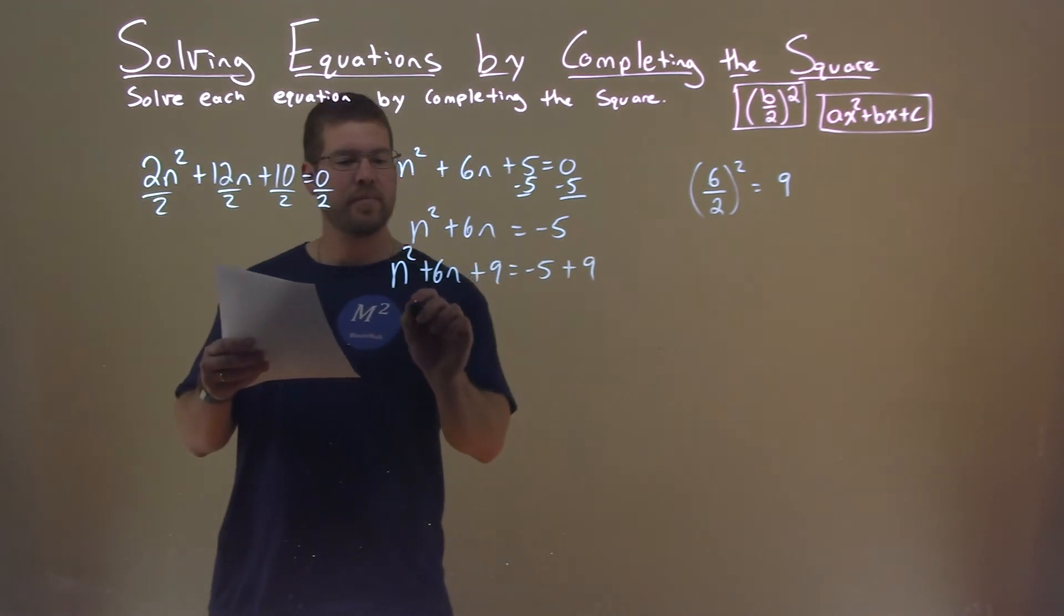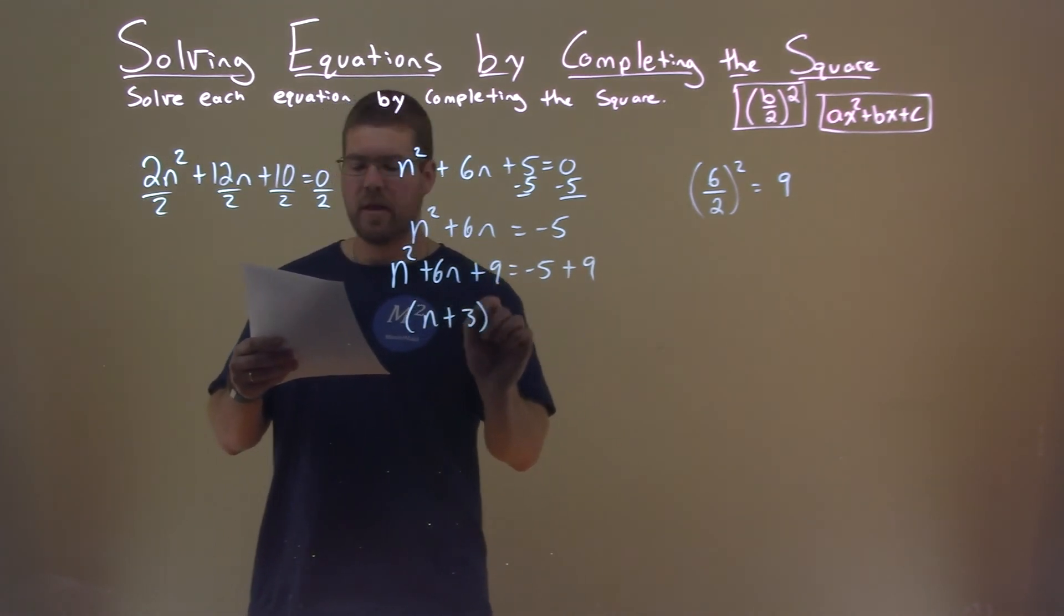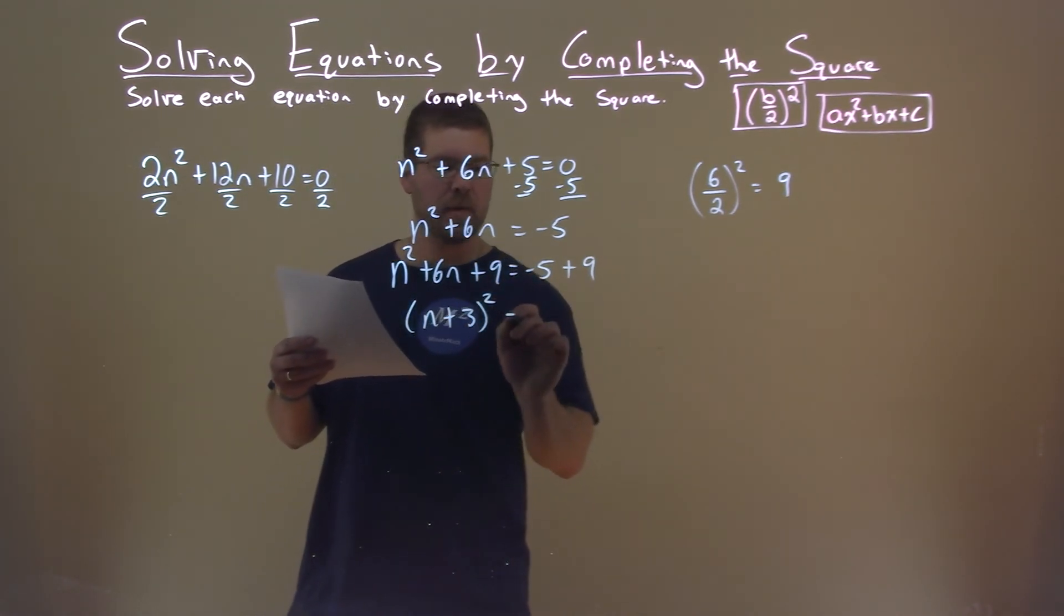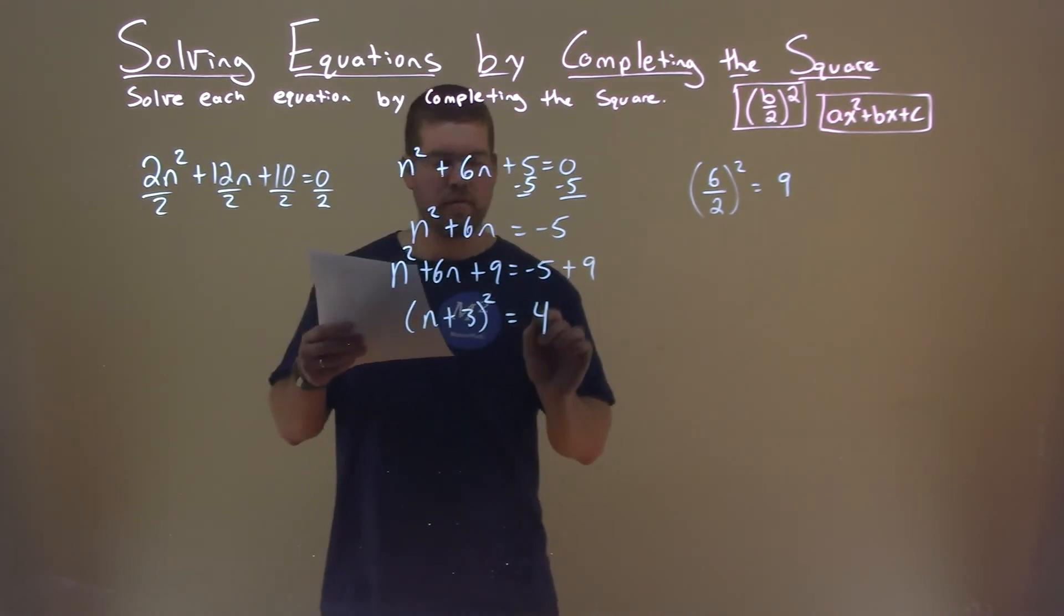Left hand side is a perfect square: n plus 3, that was by design, squared. And negative 5 plus 9 is a positive 4.